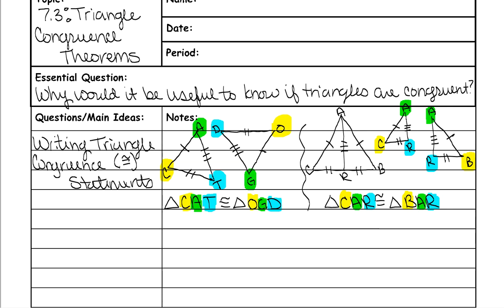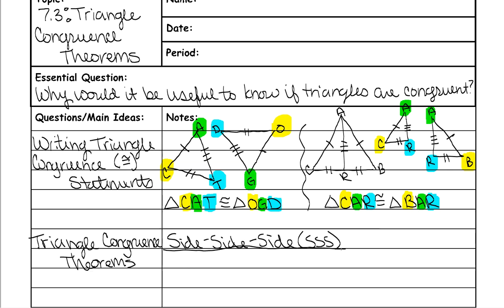Now we have to go over all the different triangle congruence theorems — there are five of them. We're going to start with side-side-side, abbreviated SSS. On your test, you should just write SSS rather than spelling it out. Here's an example of what two triangles that are congruent by SSS could look like — it doesn't mean that's what it will always look like, since there are lots of different ways to draw them. In this example, you're given a top-left triangle and a bottom-right triangle separated by a diagonal.